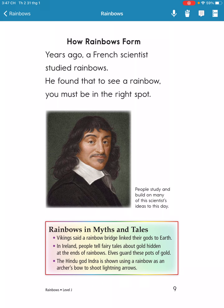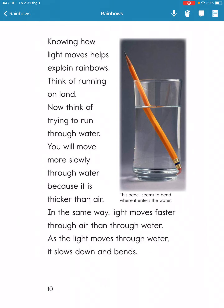A French scientist studied rainbows and found that to see a rainbow, you must be in the right spot. Knowing how light moves helped explain rainbows.